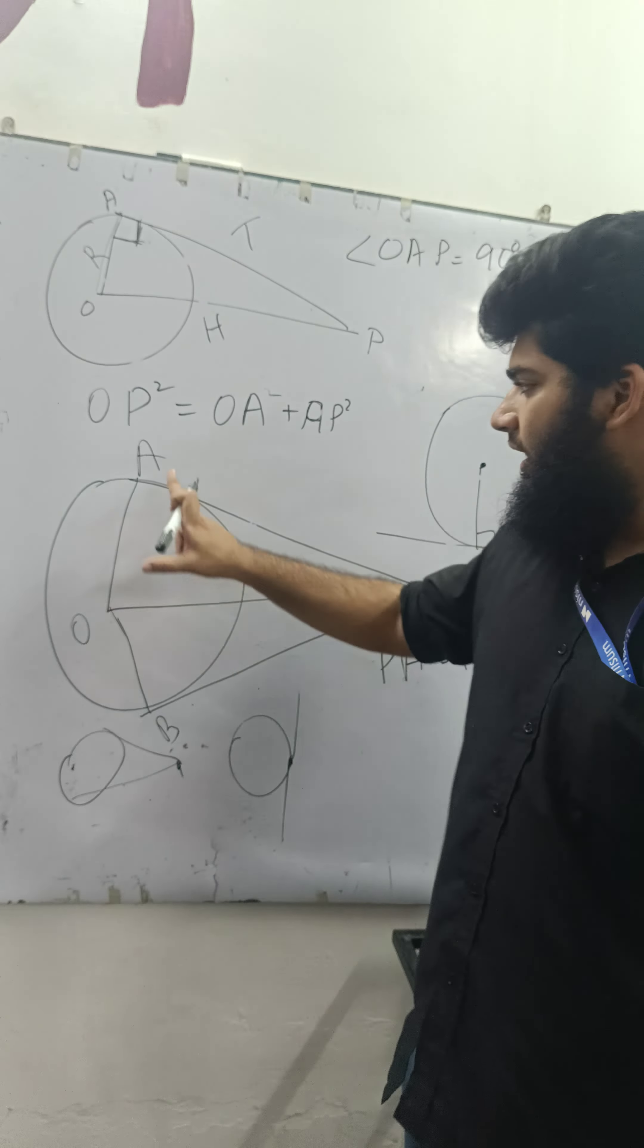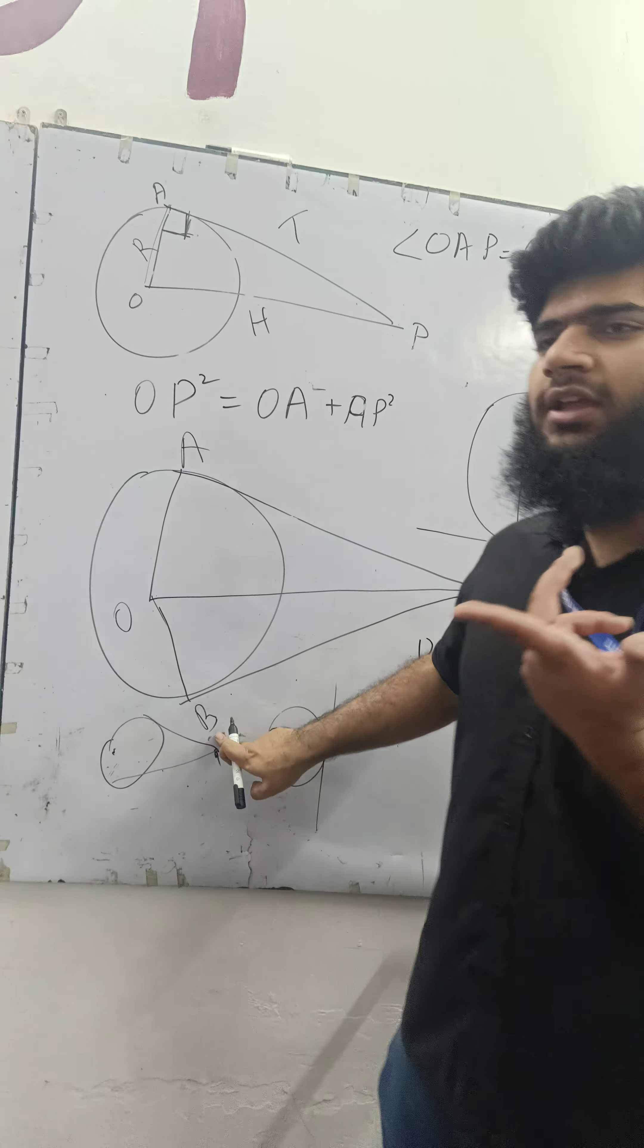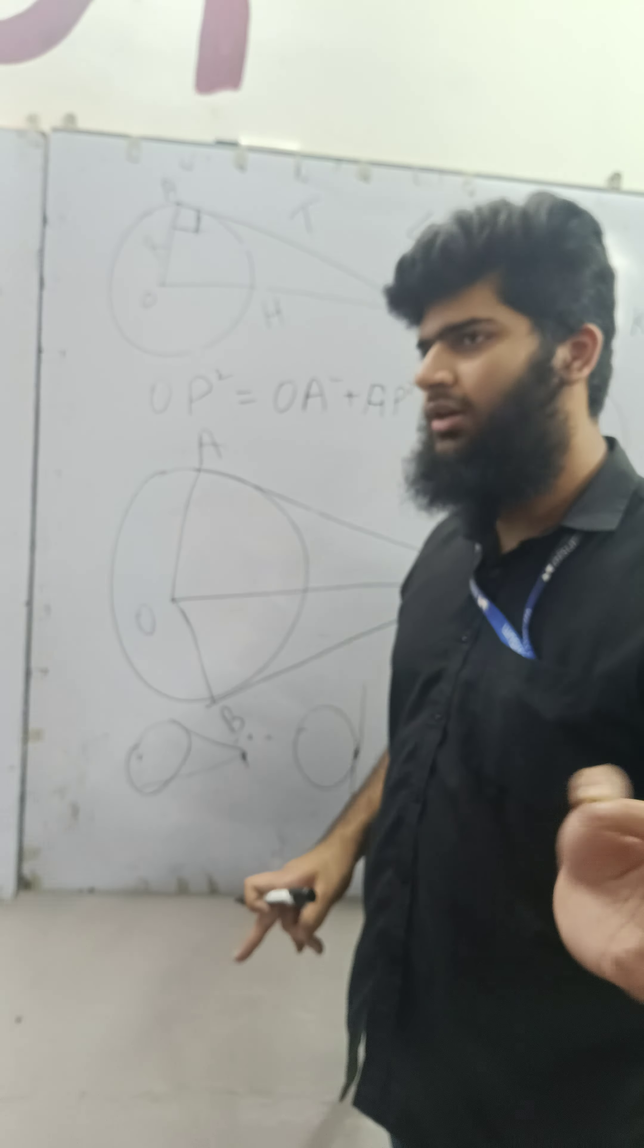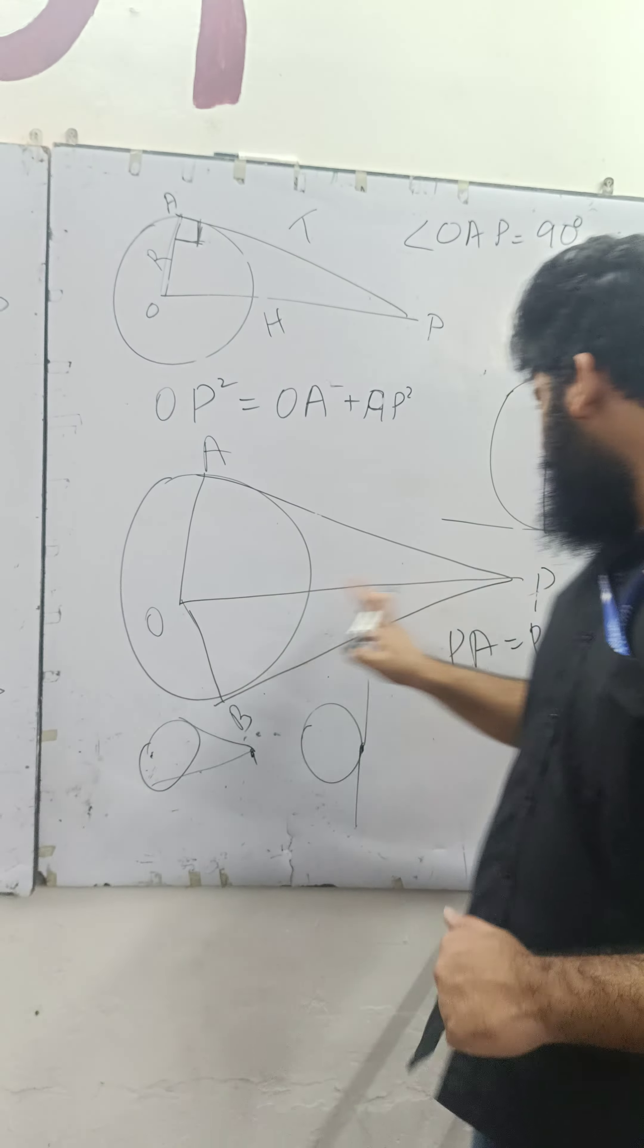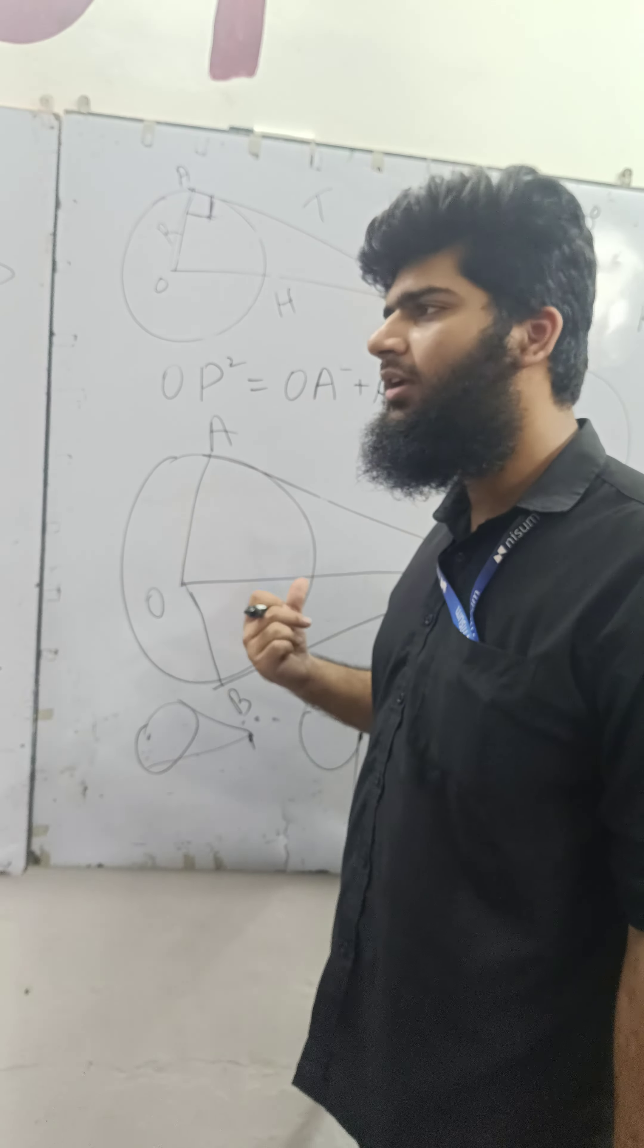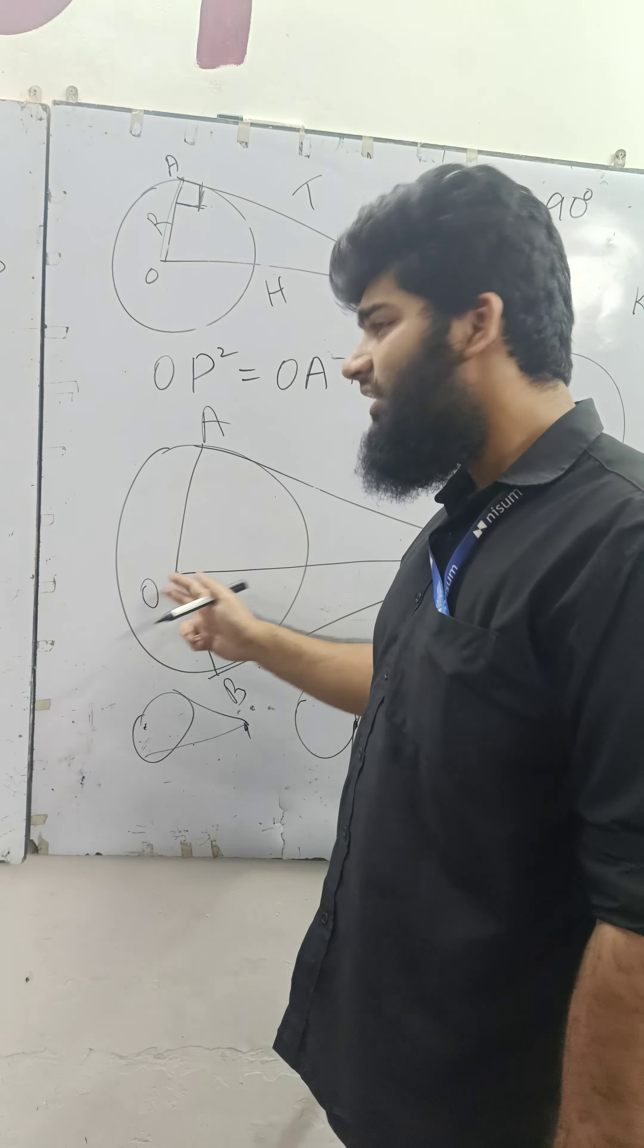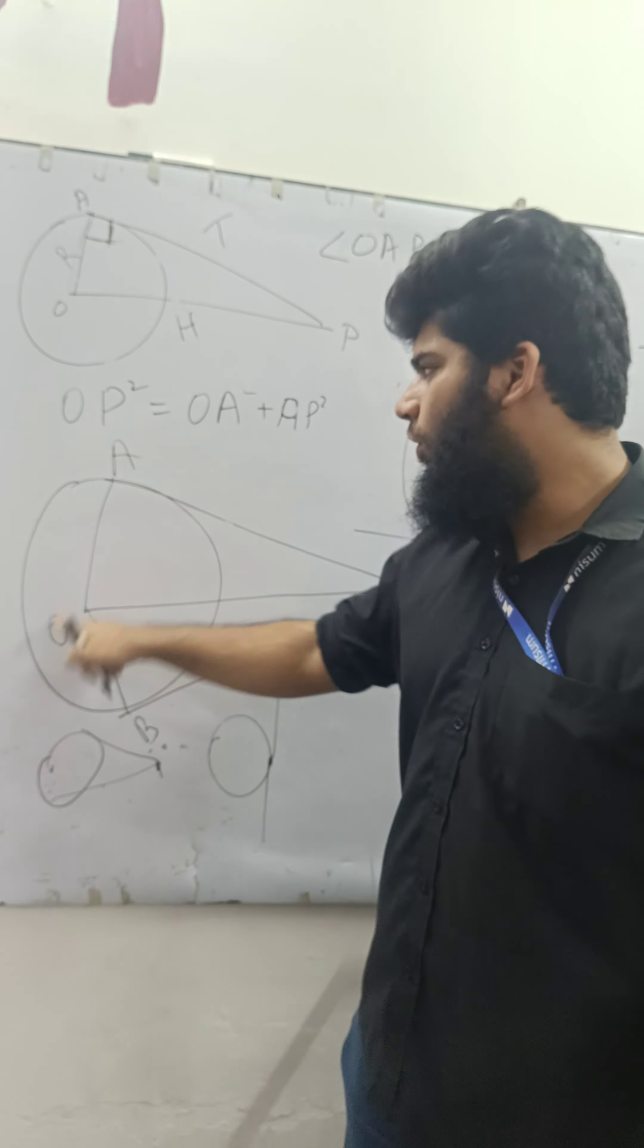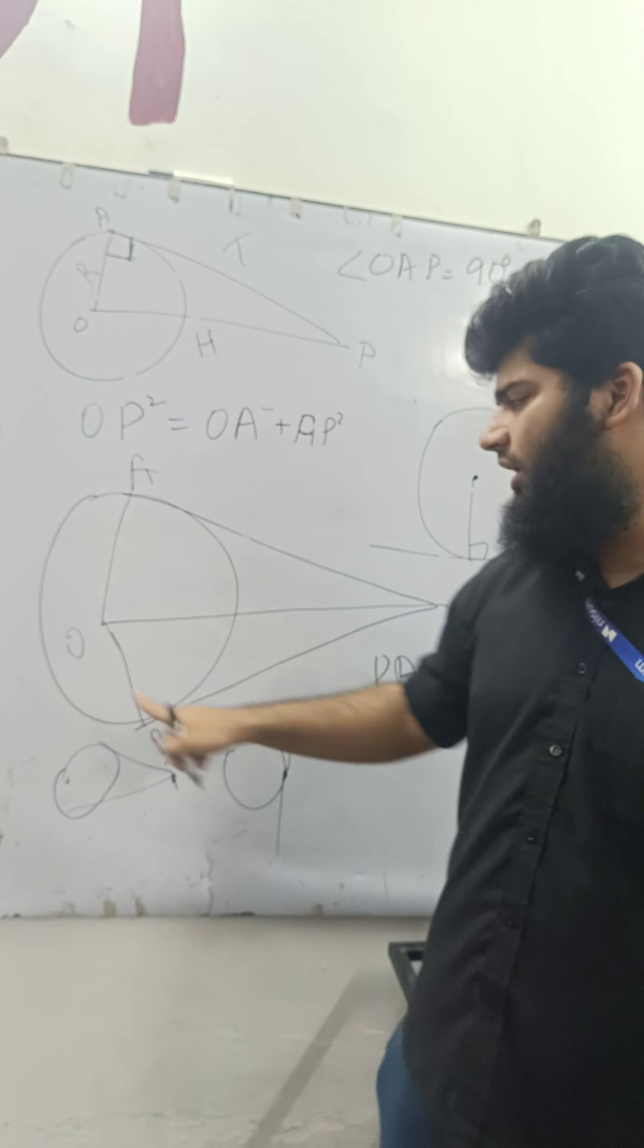We are seeing OA is equal to OB. Why? Because OA and OB are the radius. OP is equal to OP. Why? It's common.